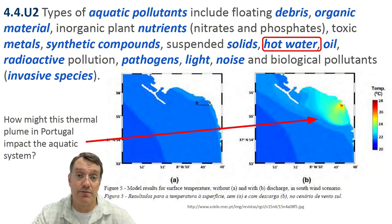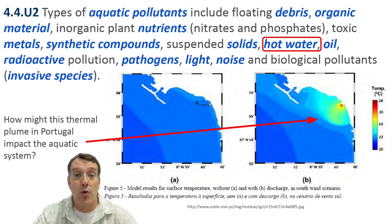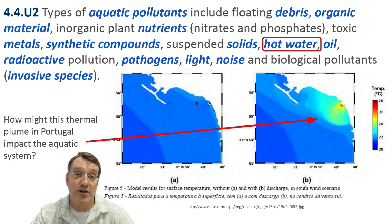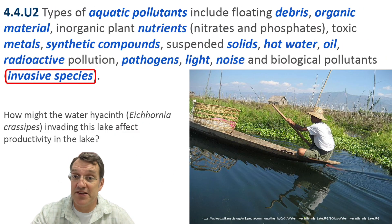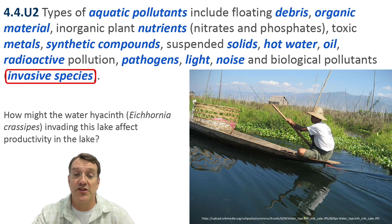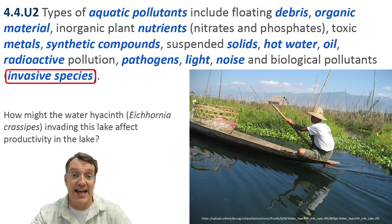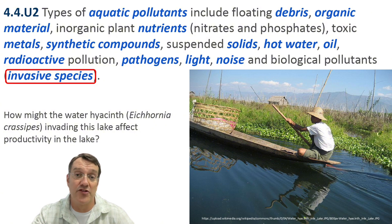Thermal pollution, or heat pollution, shown here in this thermal plume diagram from Portugal, significantly affects aquatic ecosystems by altering water temperature patterns and oxygen levels. Most aquatic organisms have an ideal temperature range in which they thrive, and if the temperature is either too low or too high, it stresses them out and their populations decline. Biological pollutants, such as invasive species like this water hyacinth in Cambodia, can dramatically alter aquatic ecosystems because it out-competes native species and can change habitat conditions by shading out the environment under the surface of the water.